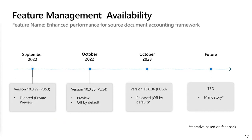The feature 'Enhanced performance for source document accounting framework' was in private preview in 10.0.29. From 10.0.30 it is generally available in your environment as of October. Based on feedback, it will be released on by default, and ultimately it will become a mandatory feature for free text invoicing.